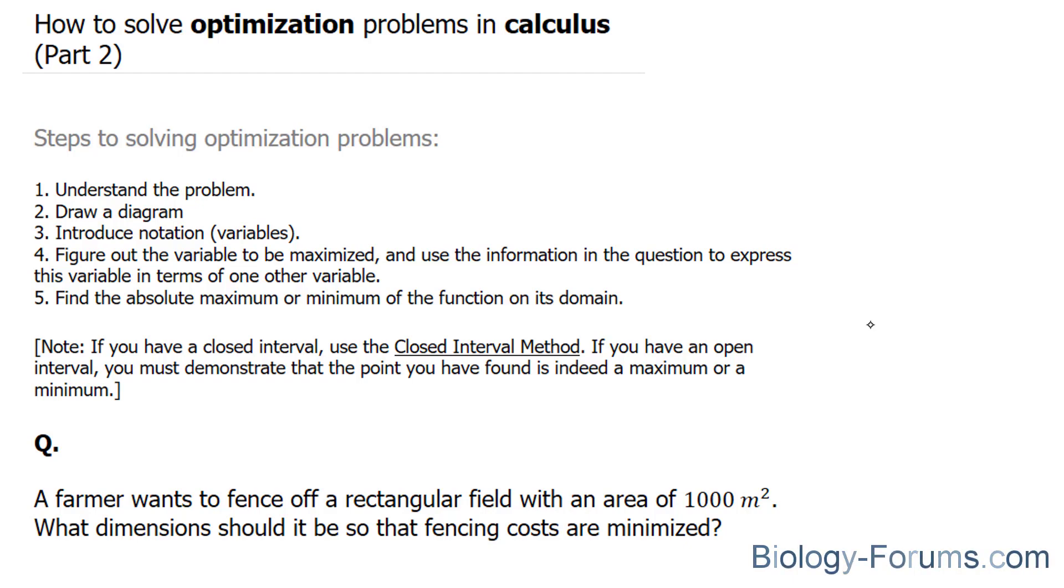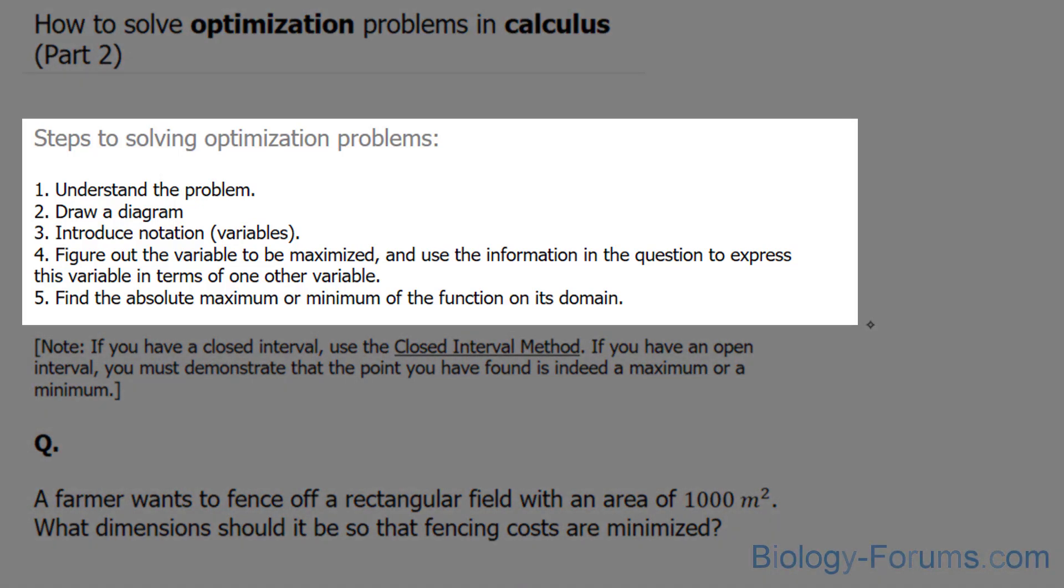As discussed in part one, the steps to solving optimizations are the following. And the end goal is to find points that are going to represent either the absolute maximum or minimum.